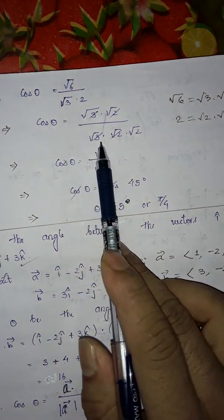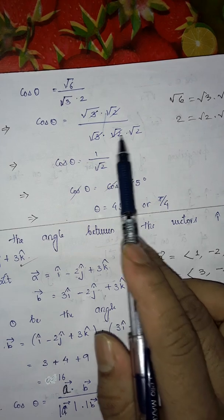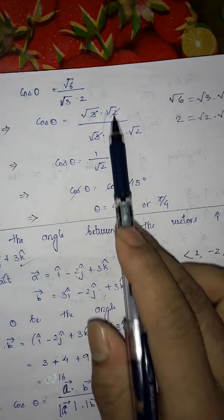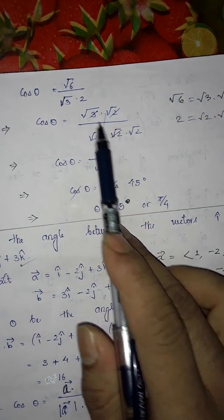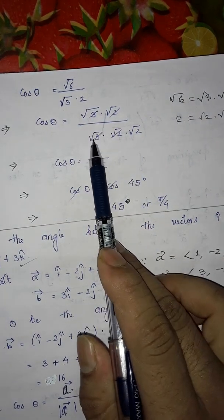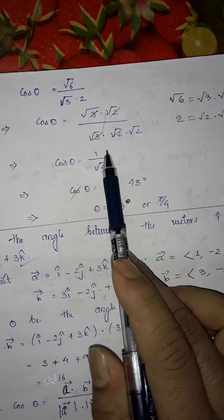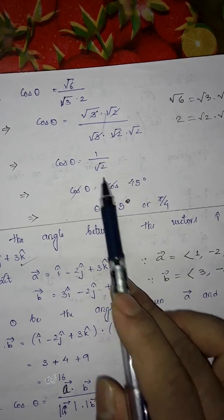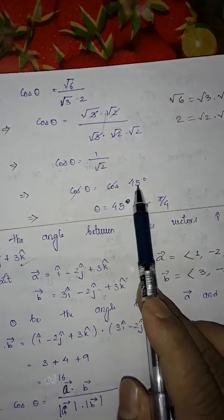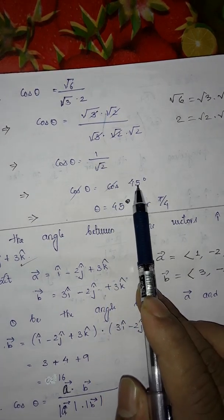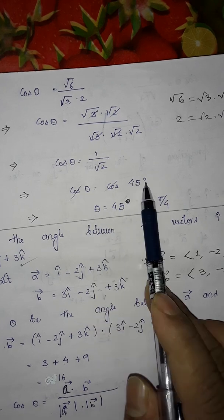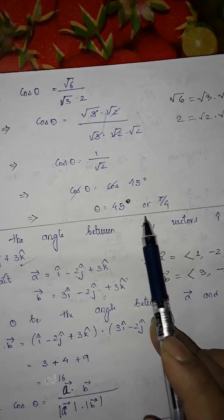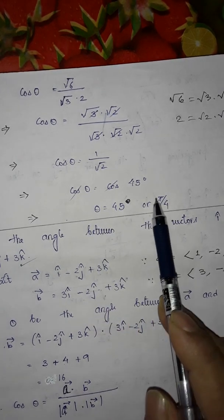In the denominator, 2 is √2 times √2. So √2 and √2 cancel, and √3 and √3 cancel. So cos θ equals 1/√2. Since 1/√2 equals cos 45°, we get θ = 45°.